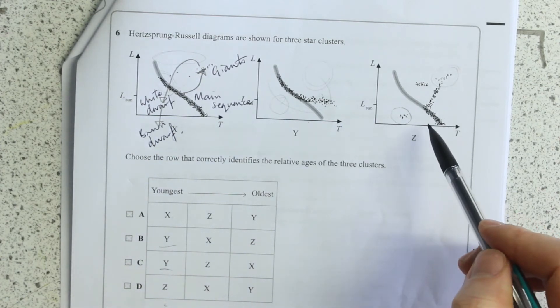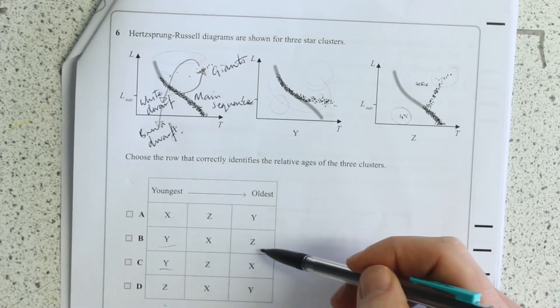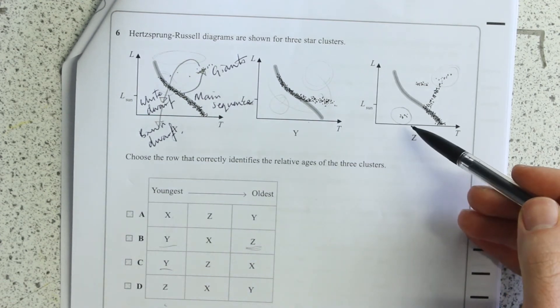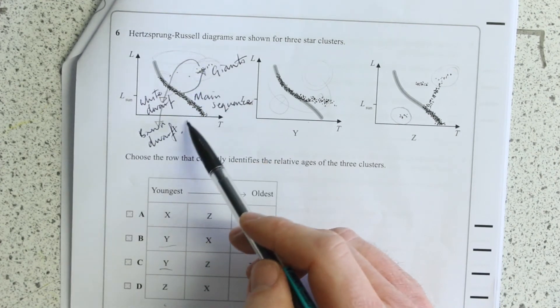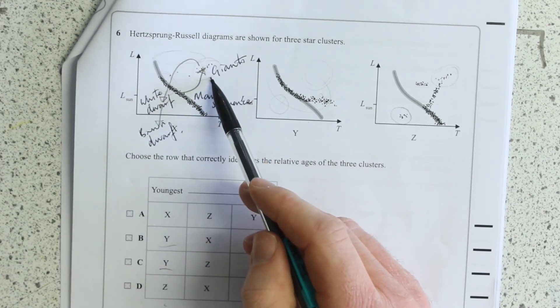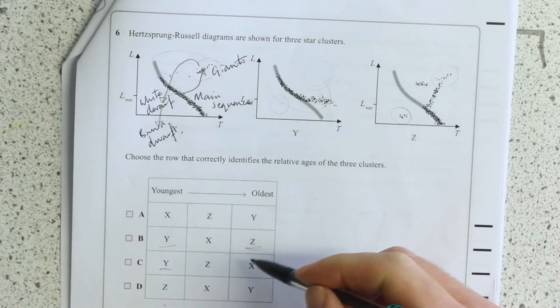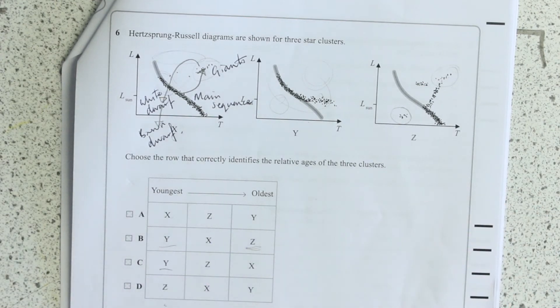Okay, but Z has the Giants - so Z must be the oldest - sorry, Z has the Giants and the Dwarfs. X has got Giants. Z has got the Dwarfs, so Z must be the oldest. So the answer is B.